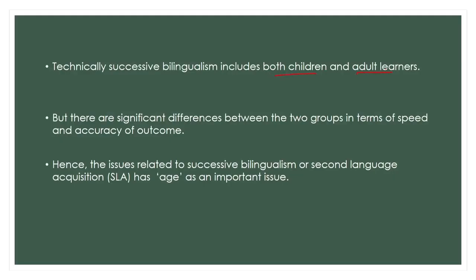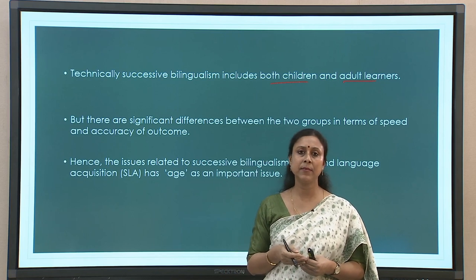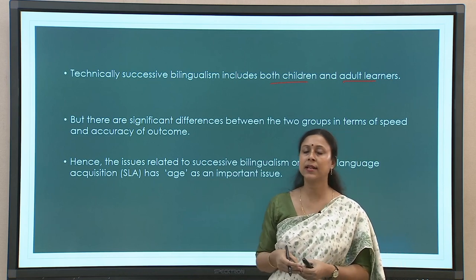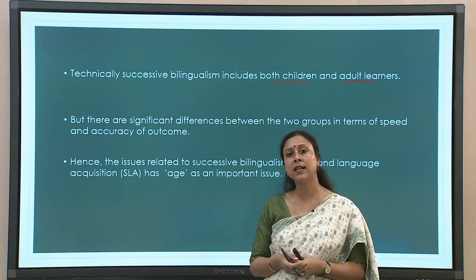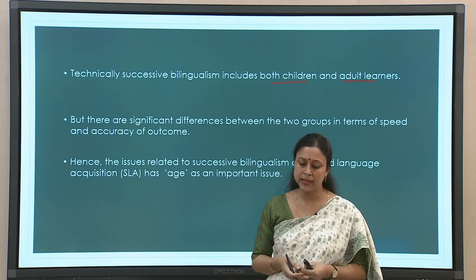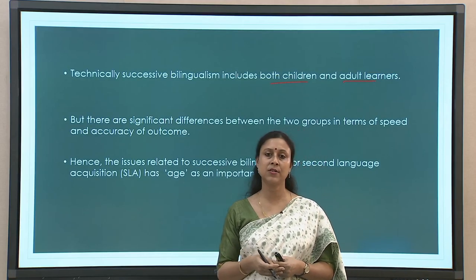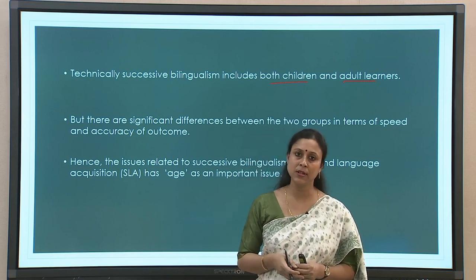It includes both children and adult learners because when one language is already in place and you are learning another language, there can be any age bracket. First language is always learned in childhood, but second language can be learned at any time. There are children who learn a second language in childhood and adults who learn it later, and all age groups in between. These are the two primary types of bilingualism with respect to second language acquisition.